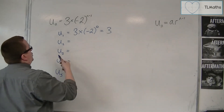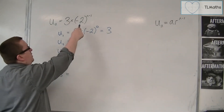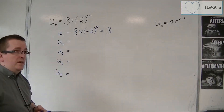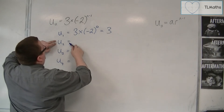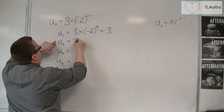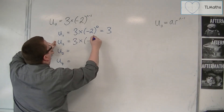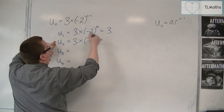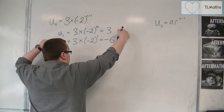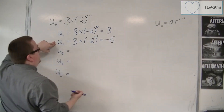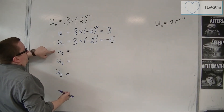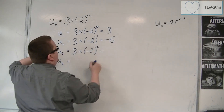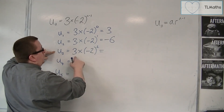So each time, if the common ratio is minus 2, I'm multiplying by minus 2 each time. And so u2 will be 3 times minus 2 to the power of 2 minus 1, so that's 1, and so that's minus 6. So u3 is 3 times minus 2 squared; minus 2 squared is 4, and 3 times 4 is 12.